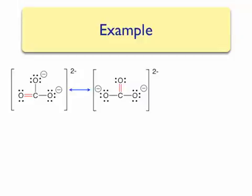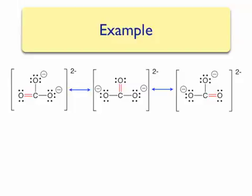We can apply the same trick to draw the third resonance structure, which once again takes a shared pair of electrons between the vertical oxygen-carbon bond and makes it into a lone pair. It takes a lone pair on the right-most oxygen and makes it into a bonding pair.